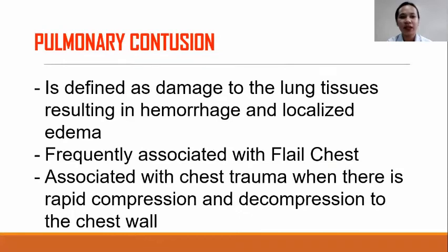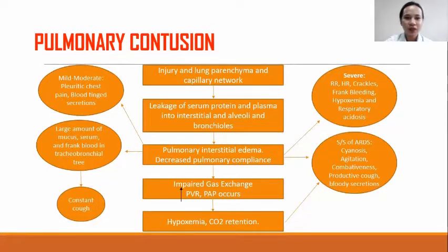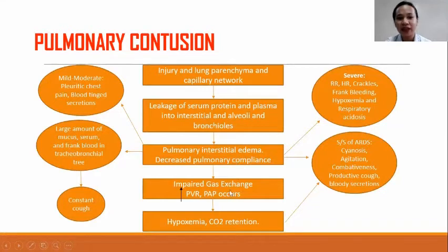Pulmonary contusion is defined as damage to the lung tissues resulting in hemorrhage and localized edema. It is frequently associated with flail chest and occurs with chest trauma when there is rapid compression and decompression of the chest wall. There is injury to the lung parenchyma capillary network, resulting in leakage of serum protein and plasma into the interstitium, alveoli, and bronchioles, which can interfere with gas exchange. Increased pulmonary vascular resistance and pulmonary artery pressure occur, leading to hypoxemia and carbon dioxide retention.